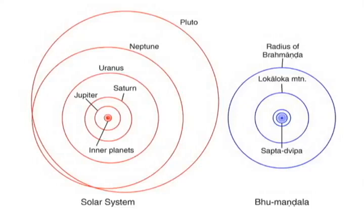First of all, we can understand the size of Bhumandala by comparing it with the orbit of Uranus. Measured in Yojanas, Bhumandala is slightly bigger in diameter than the orbit of this planet.